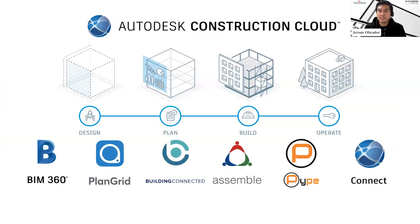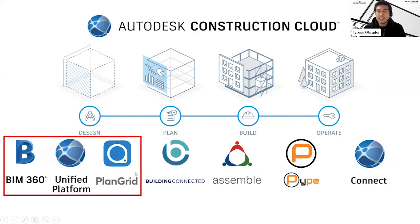The Autodesk Construction Cloud is a collection of Autodesk cloud solutions including BIM 360, PlanGrid, Building Connected, Assemble, Pipe, and the Autodesk Construction Cloud Connect. Most existing clients use BIM 360, but they are transitioning to the new platform — the Autodesk Construction Cloud, also termed the unified platform. Autodesk took the best of these solutions and combined them into one platform, integrating features from BIM 360 and PlanGrid.